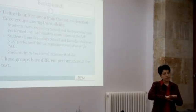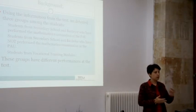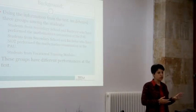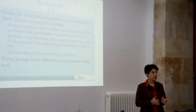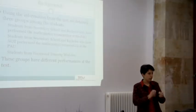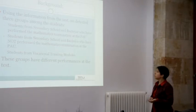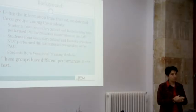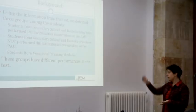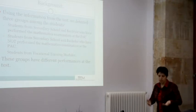We expected the secondary school and bachelor students, and the vocational training students — formación profesional in Spanish. We knew there were two groups, but we found three: students from secondary school who have taken the mathematics examination, students who have not taken the mathematics examination, and students from vocational training. They have different performances.